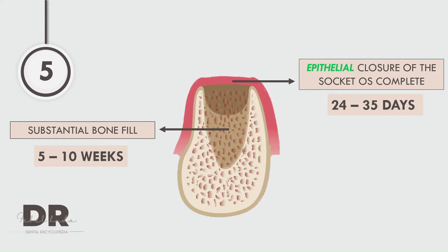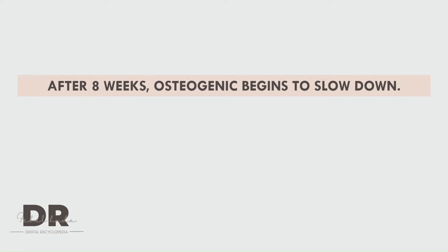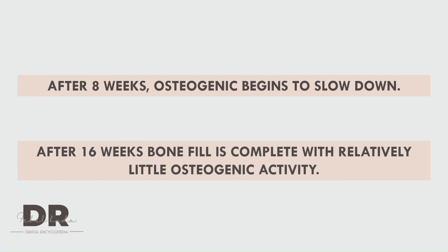Is this bone mature enough? Even though the osteogenic activity slows down in about eight weeks, it takes a total of 16 weeks for it to completely stop. That means complete maturation of the bone takes around 16 weeks. Do we have to wait so long to place an implant? No — but keep these time frames in mind, so that when correlating with implant placement timelines, it will be much easier to understand how the body behaves and how you can utilize that to your advantage.